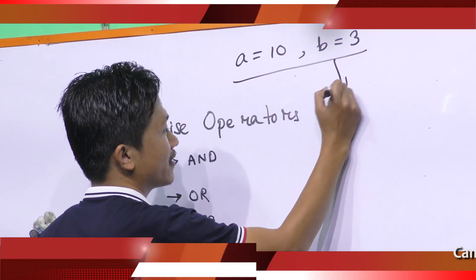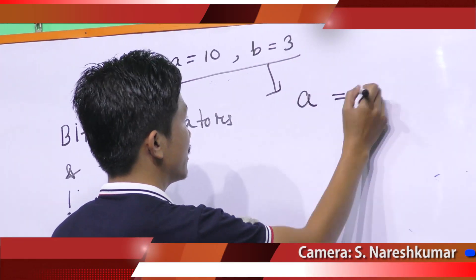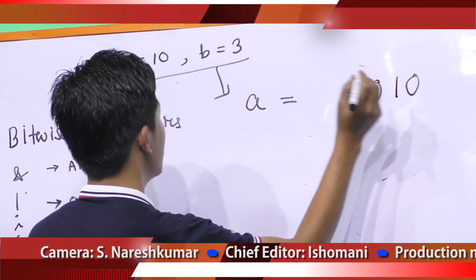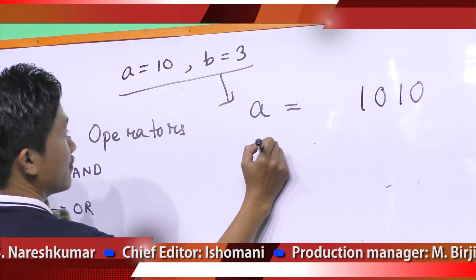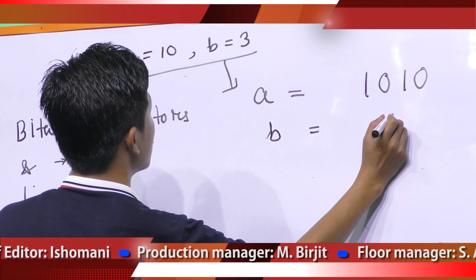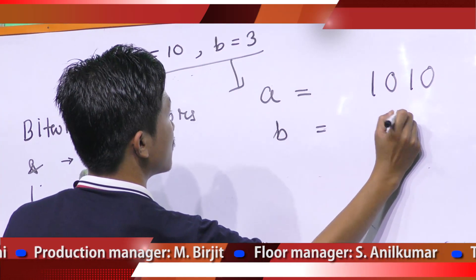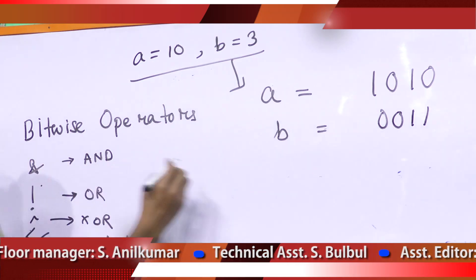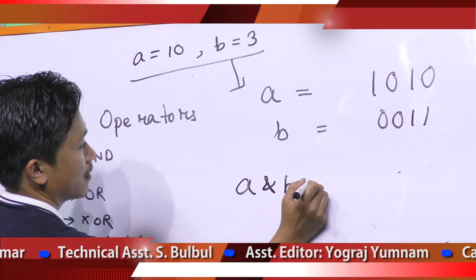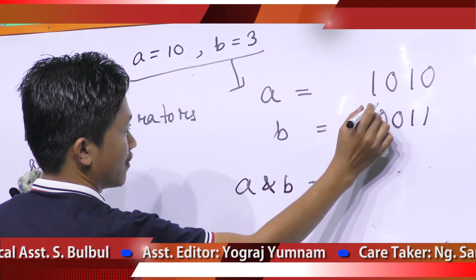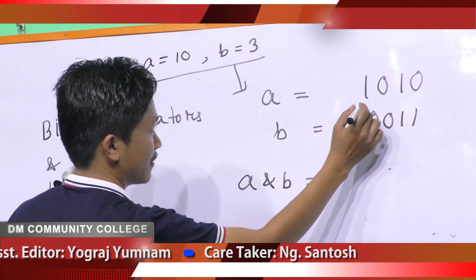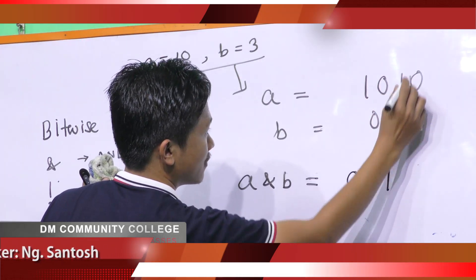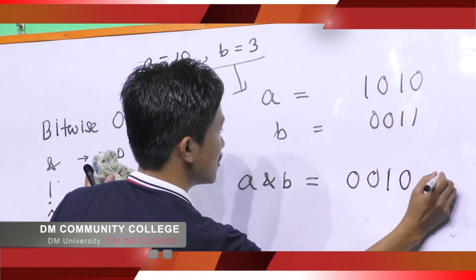The binary equivalents of A and B are: A equals 10, which in binary is 1010, and B equals 3, which in binary is 0011. To calculate A AND B, we perform bitwise AND: 1 AND 0 is 0, 0 AND 0 is 0, 1 AND 1 is 1, 0 AND 1 is 0 — which gives 0010, meaning 2.